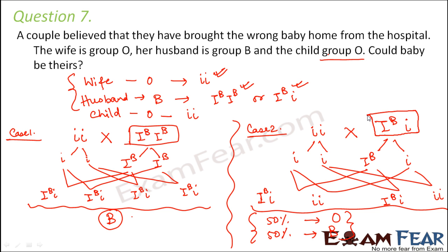In this case, the child can be theirs only if the husband is heterozygous (I^B i). But if the husband is homozygous (I^B I^B), then this child is not theirs. This is how we can calculate what blood group offspring can have, or what blood group the parents must have given the offspring's blood group.